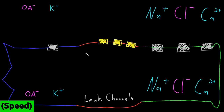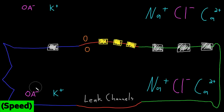First, let's consider a neuron with no resting potential, so it's not more positive outside or more negative inside the membrane. We'll consider that all these key ions have the same concentration inside and outside the neuron, so that there are no concentration gradients for organic anions, potassium, sodium, chloride, or calcium.